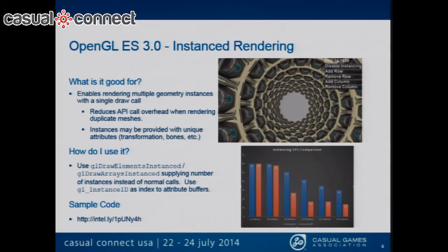Next we're going to talk about instanced rendering. It's good for rendering multiple geometry instances with a single draw call. Basically, instead of looping over every single draw — loop, draw, loop, draw — and going through the API every single time accumulating all that overhead, you could just do one call. One time getting the API overhead, and you could render 200 instances of something.